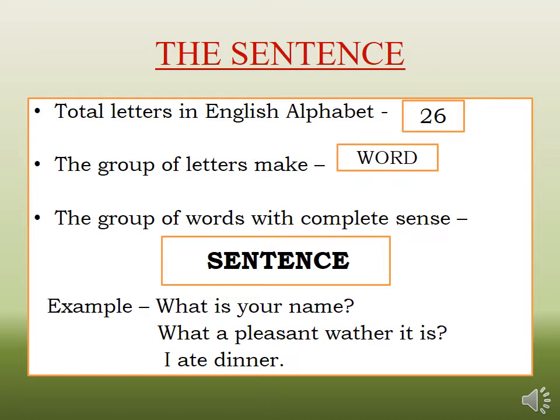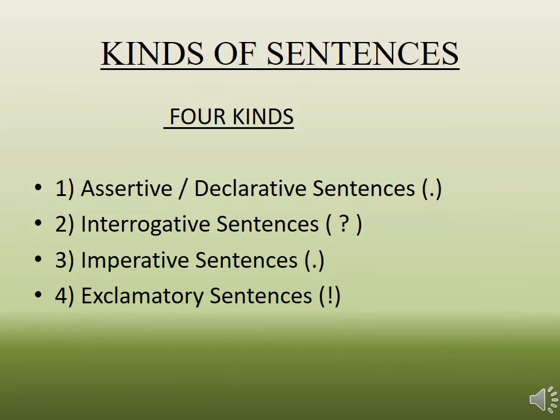We will now look at the kinds of sentences. Today we will be learning about four kinds of sentences. The similarity among all four is that they start with a capital letter and end with a punctuation mark — like a full stop, exclamation mark, or question mark. The first is assertive or declarative sentences, which end with a full stop. Second is interrogative sentences, which end with a question mark. The third is imperative sentences, which again end with a full stop. The fourth is exclamatory sentences, which end with an exclamation mark.